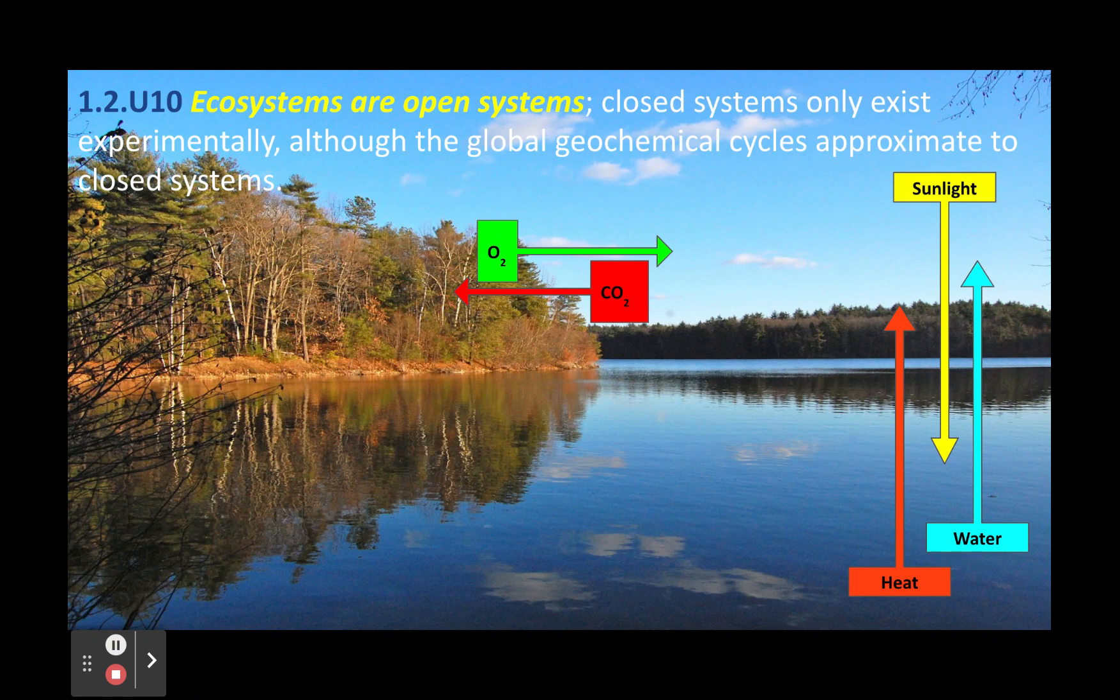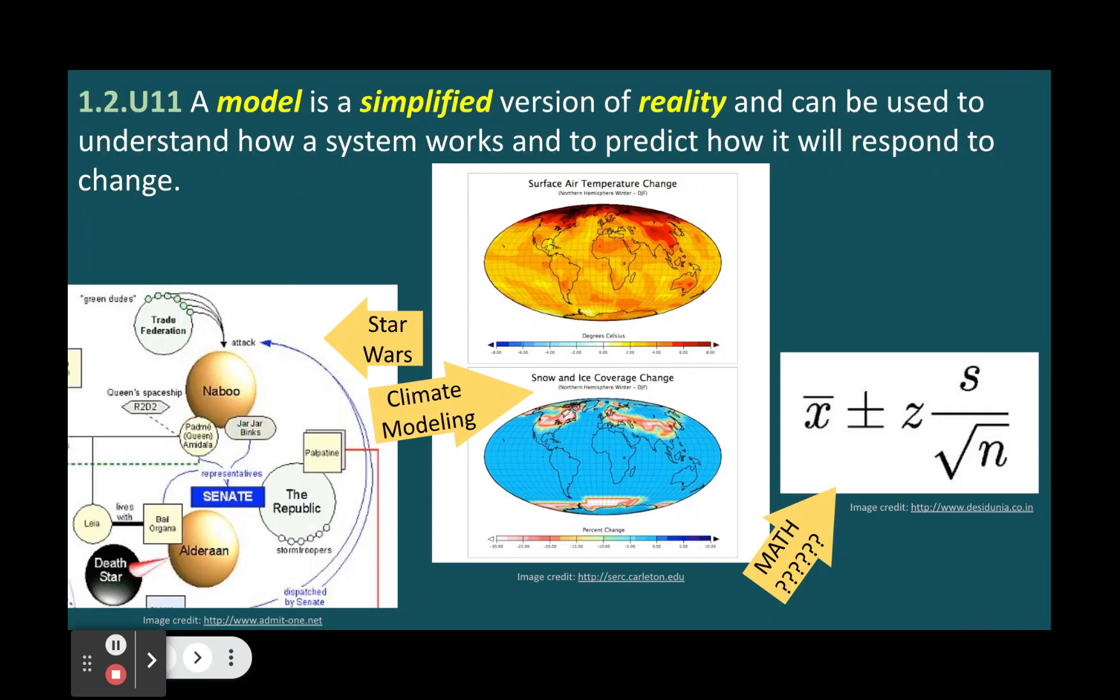Ecosystems are open systems because they exchange both energy and matter with their surroundings. Closed systems exist experimentally, such as in laboratories or controlled experiments where matter exchange is prevented or minimized. However, closed systems do not exist naturally on Earth because there is always some degree of matter exchange between different parts of the Earth system.